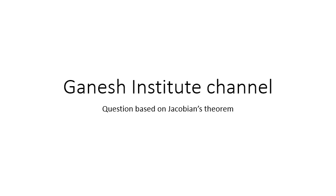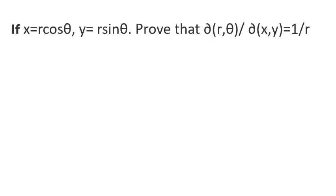Let's see what we have in terms of the question. The question states that x equals r cos theta, y equals r sine theta, and you have to prove that the partial differentiation of (r, theta) divided by partial differentiation of (x, y) equals 1 by r. Whenever there is a partial differentiation with respect to two or more variables given in the form of functions r, theta and x, y, you need to apply Jacobian's theorem.